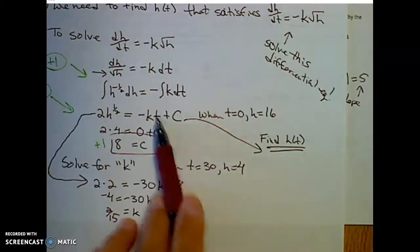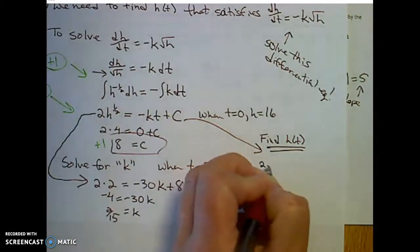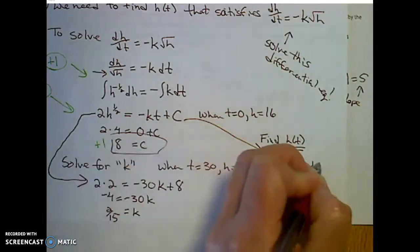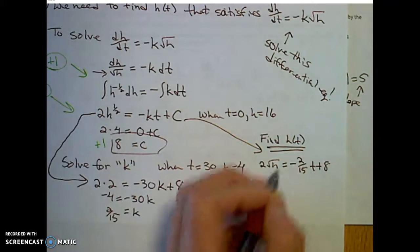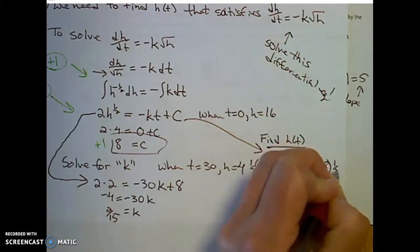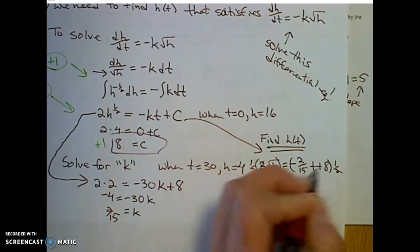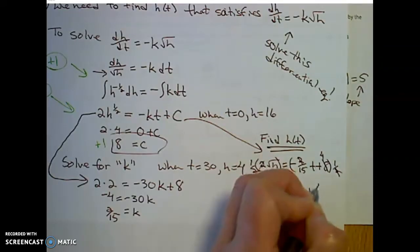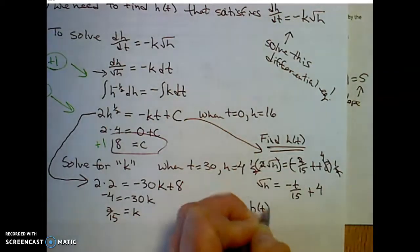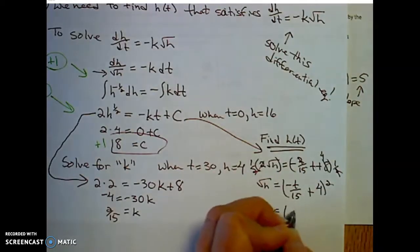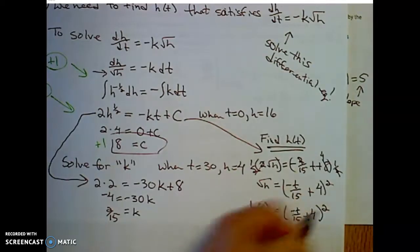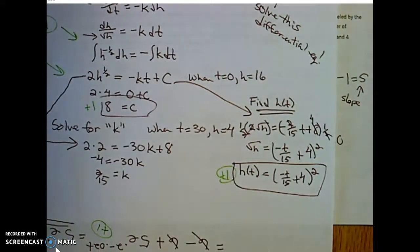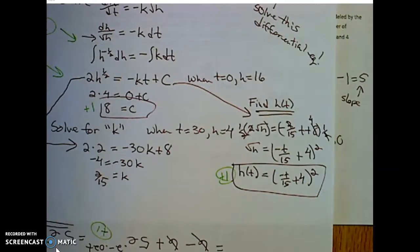Plugging everything back in: 2 times the square root of h equals negative (2/15)t plus 8. Multiply both sides by one-half: the square root of h equals negative t over 15 plus 4. Squaring both sides gives h(t) equals (negative t over 15 plus 4) squared. That's your fourth point earned for finding the function for height. Thanks for watching — have a great day.